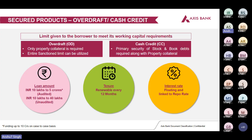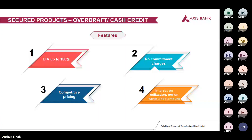For loan amount: for audited financials, it goes from 10 lakhs to 5 crores; for unaudited financials, from 10 lakhs to 40 lakhs. The product is renewable every 12 months. Interest rate is floating and linked to repo rate. Features of CC/OD: LTV is up to 100%, there are no commitment charges, pricing is competitive, and interest is charged only on utilization — not on the entire sanctioned amount.